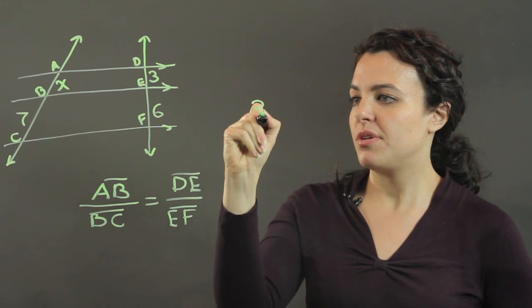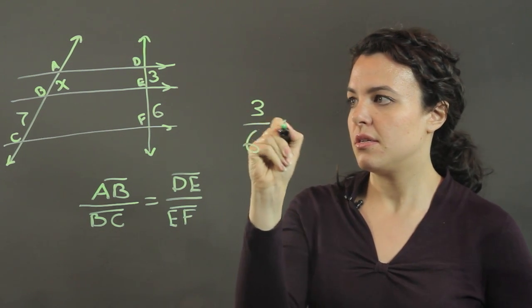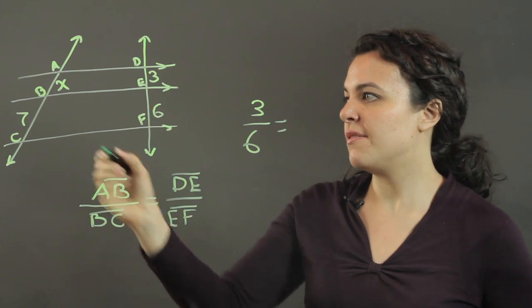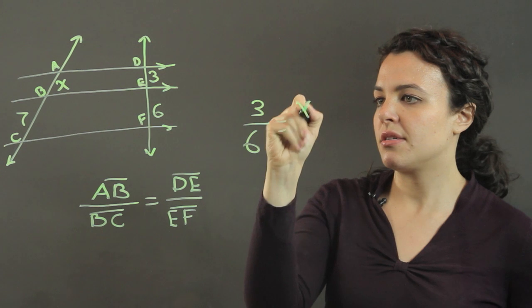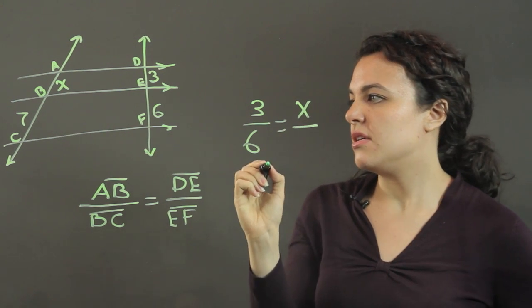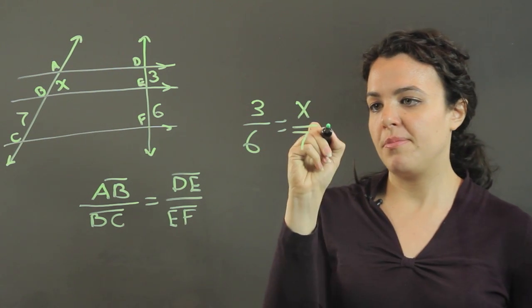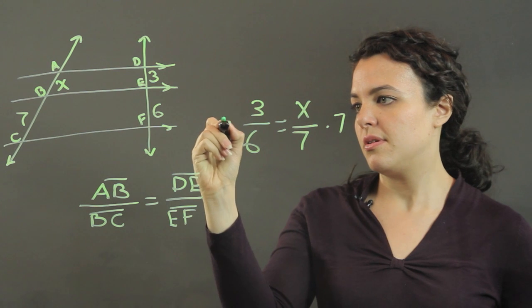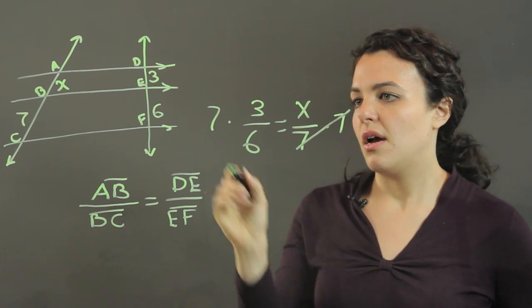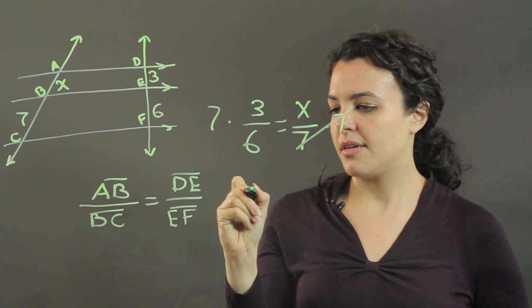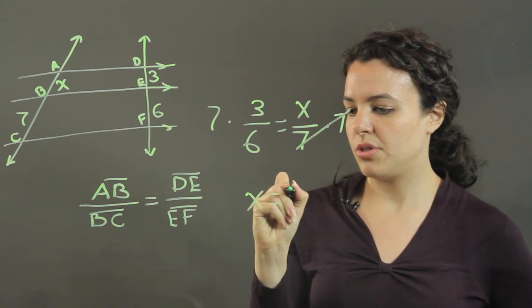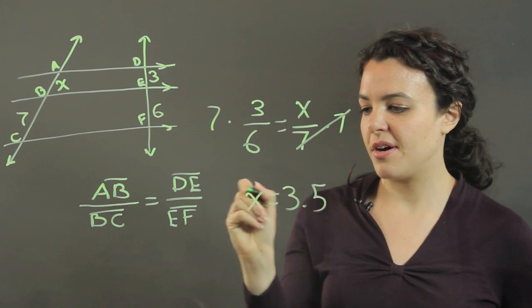So AB is to BC as DE is to EF. That means three is to six. DE is to EF as X, or AB, is to BC, which is seven. If I multiply both sides by seven, I will get that X is equal to 3.5.